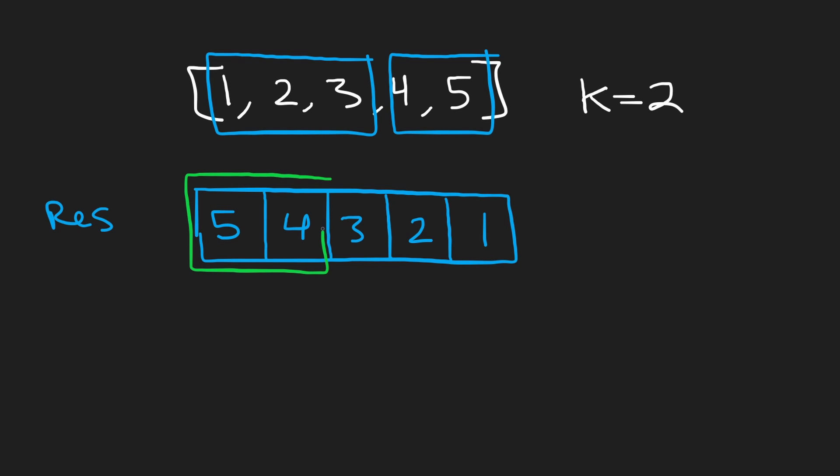Do you notice anything about this array? First of all is this the array that we're looking for? Is this the rotated array? It's definitely not. It's not the rotated array because we would want this four and five to be in the correct order in the same order but it's not in the same order and see these values one two three we would want them to be in the same order over here but they're not in the same order.